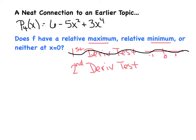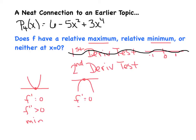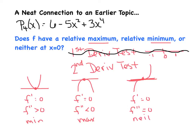Let me do a quick recap of the second derivative test. There are three possible scenarios. One: the function is concave up with a horizontal tangent line — f prime equals zero and f double prime is greater than zero — giving a relative min. Two: f prime equals zero but f double prime is less than zero, proving a relative max. Three: f prime equals zero and f double prime also equals zero — like what happens on x cubed at the origin — proving neither a max nor a min.